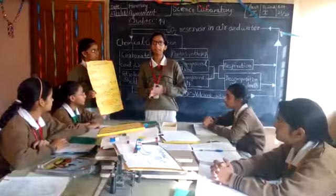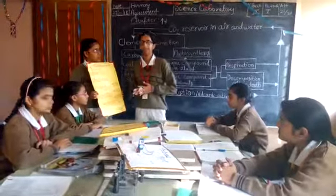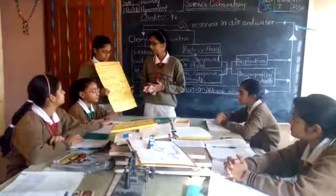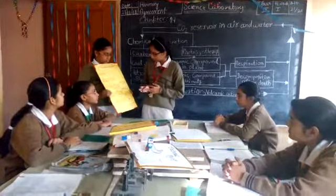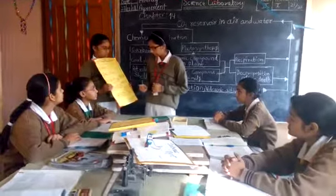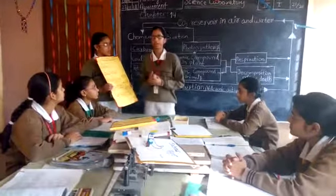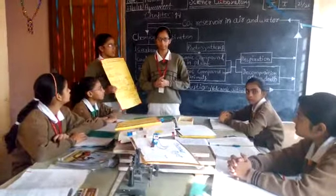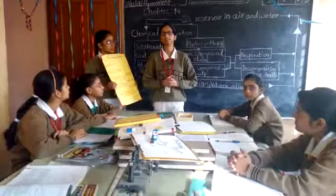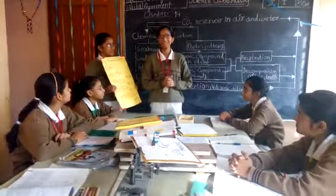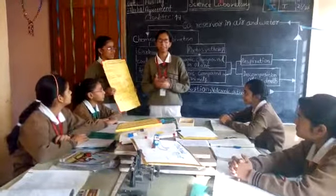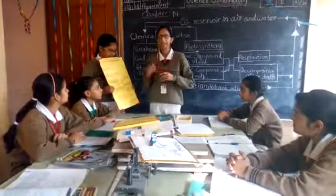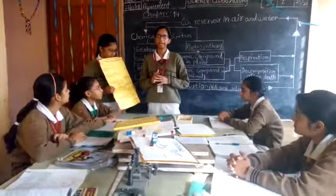After the death of animals, their bodies are responsible for the occurrence of various substances like carbonate, and their exoskeleton is responsible for the production of carbonate.